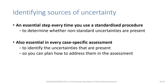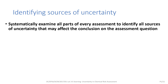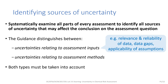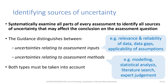The next part of this presentation is about methods to help you identify sources of uncertainty. The uncertainty guidance recommends that you systematically examine all parts of every assessment to identify all sources of uncertainty that may affect your conclusion on the assessment question. The guidance distinguishes between uncertainties relating to assessment inputs and uncertainties relating to assessment methods. Both types must be taken into account — anything that might contribute to making the conclusion uncertain. Uncertainties relating to assessment inputs include the relevance and reliability of data, data gaps, and the applicability of assumptions. Uncertainties relating to assessment methods include any issues with modelling or statistical analysis, for example poor fit or wide confidence intervals in benchmark dose analysis, and the methods used for literature search and expert judgment where these are involved.